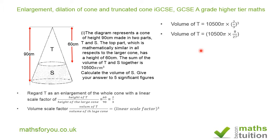Volume of T equals 10,500π times (2/3)³, which is 10,500π times 8/27, because 2³ is 8 and 3³ is 27.